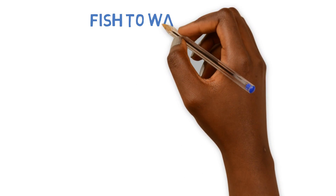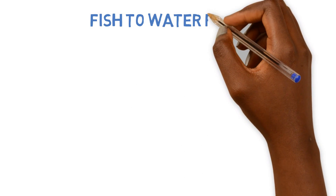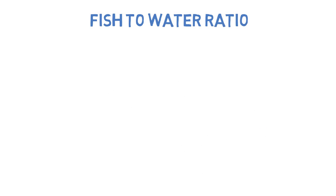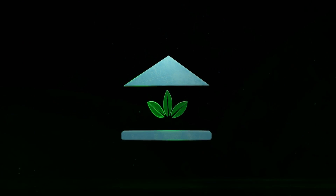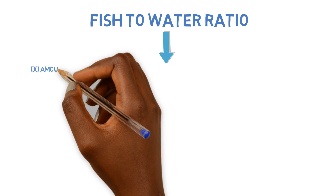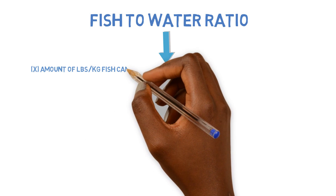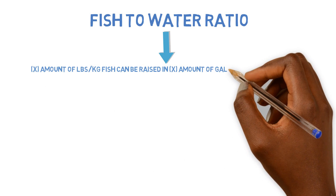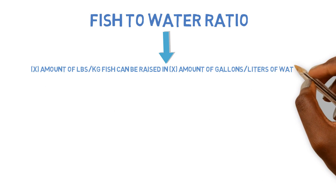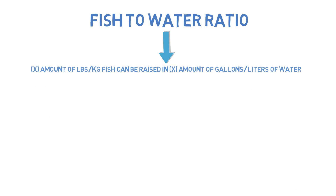Unlike the grow bed to fish tank ratio, there is such a thing as a fish to water ratio in the School of Aquaponics, where you can figure out how much fish you can stock inside of a given amount of water. There are different ways to come up with this, and different types of stocking densities you can use, depending on the type of fish you have and the type of output you want to see.